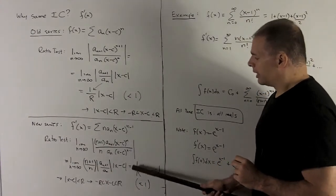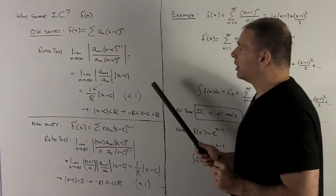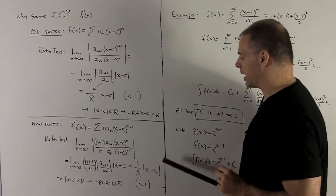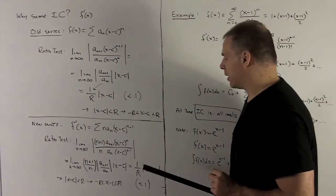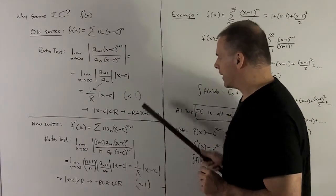So you'll notice what comes out of the ratio test is going to be the same exact thing as what we got when we did it to the original series: 1/r times |x-c|. We set that strictly less than 1 and then we just decode, and you'll notice you're going to wind up with the same interval that we had up here.